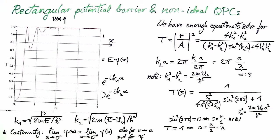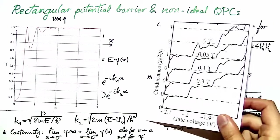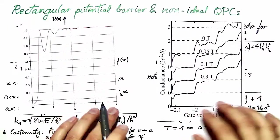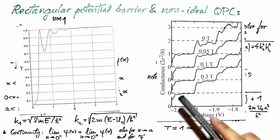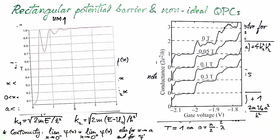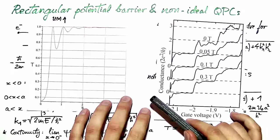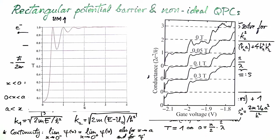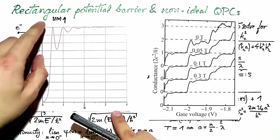Now looking back at the measurement of the non-ideal quantum point contact, we recognize that the deviations from perfect conductance on the first and the second plateau are similar to our result for the rectangular potential barrier.